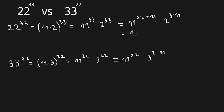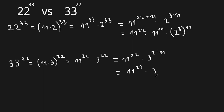Now we have the first number as 11 to the power of 22, times 11 to the power of 11, times 2 to the power of 3, all this to the power of 11. The second number is 11 to the power of 22, times 3 to the power of 2, all to the power of 11.